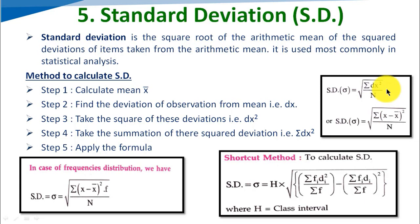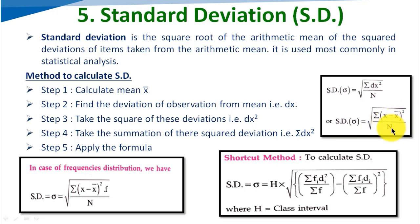Then we apply the formula: standard deviation equals the square root of sigma dx squared divided by n. This can also be written as the square root of sigma (x minus x-bar) squared divided by n.